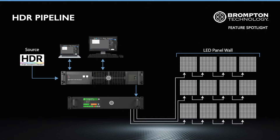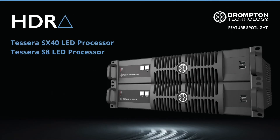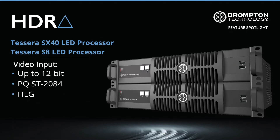We have completely reworked our processing pipeline to support and precisely propagate all information from an HDR video input through the processor, network, data distribution units, all the way to the LED panel receiver cards. Brompton HDR is exclusive to our Tessera SX40 and S8 LED processors. Both accept video input at up to 12-bit colour and support the two most common HDR formats — PQ, as specified in ST2084 and used for HDR10, and Hybrid Log Gamma (HLG) — offering compatibility with a wide range of HDR video sources via SDI or HDMI 2.0.